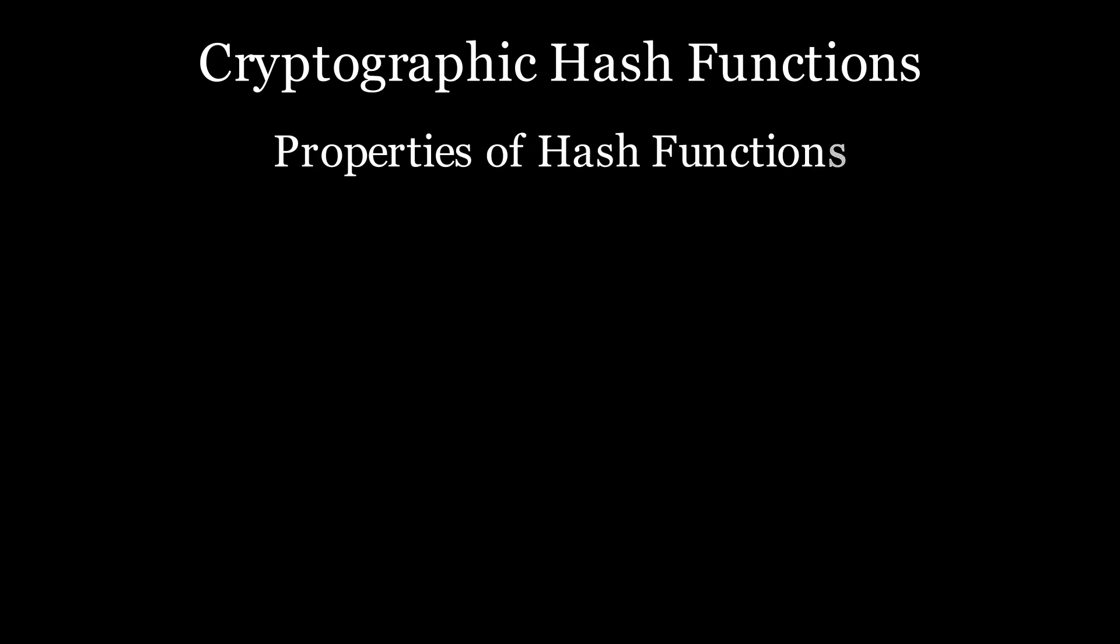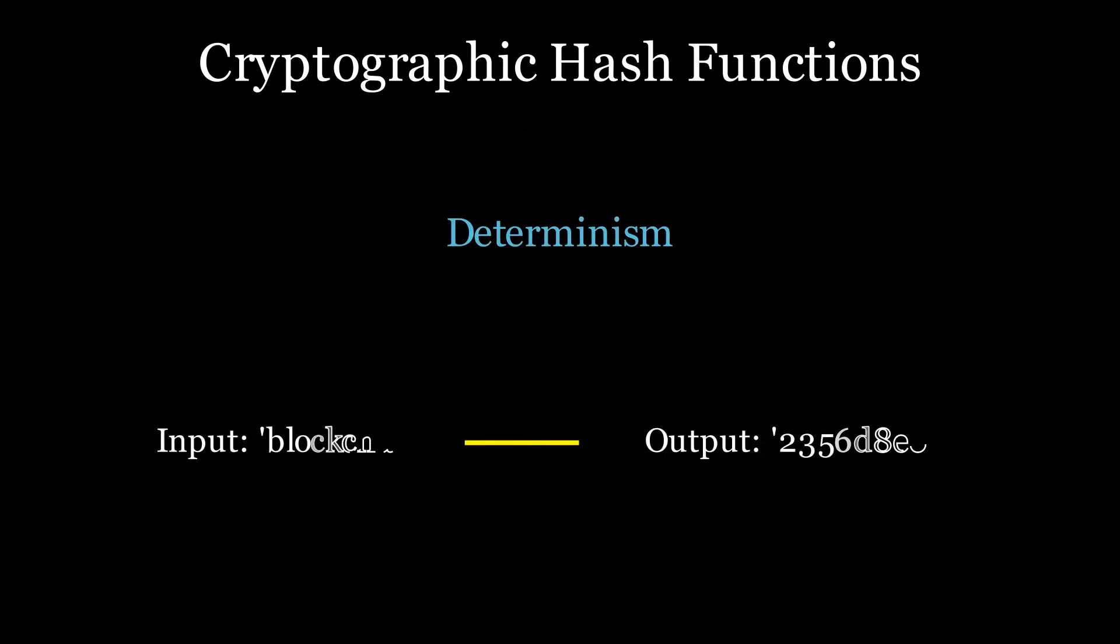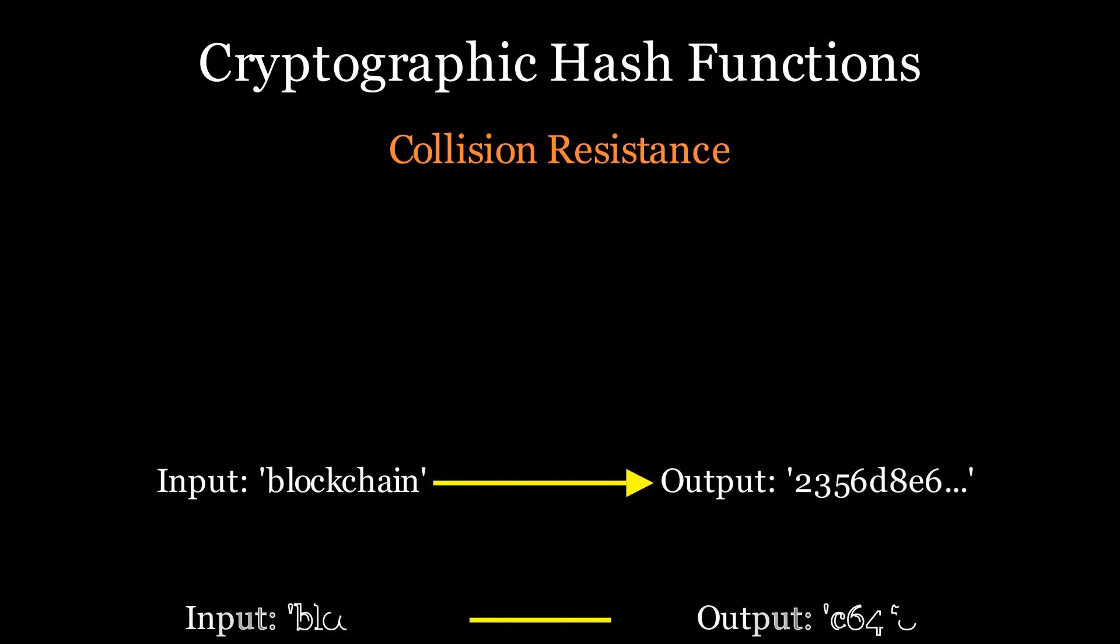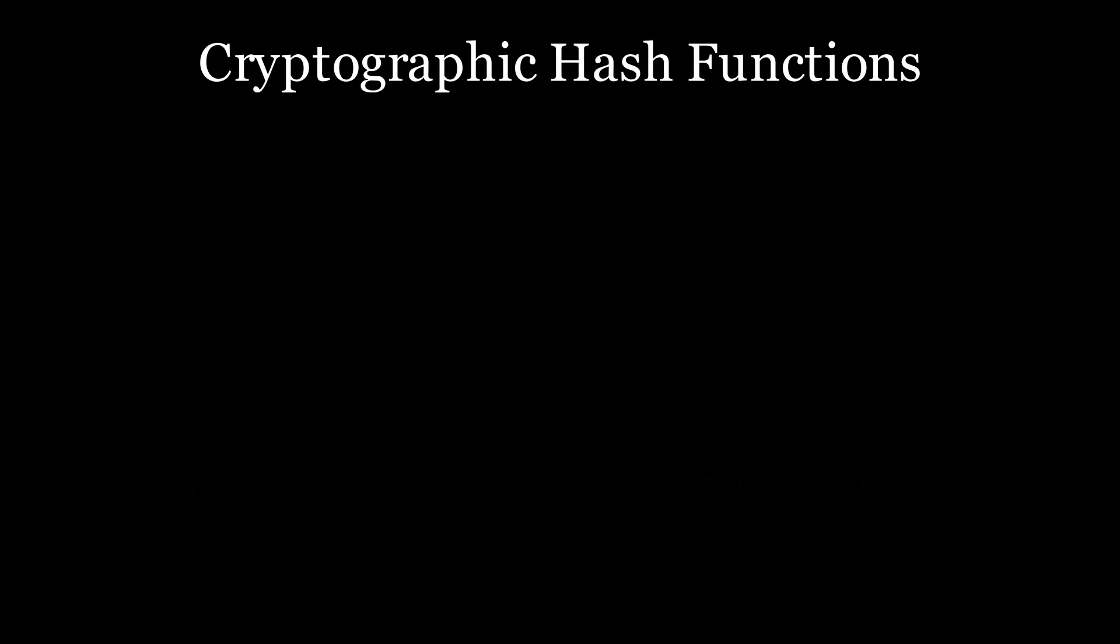First being determinism, meaning the same input always gives the same output. And next, collision resistance. It's practically impossible to find two different inputs with the same output. And lastly, irreversibility, meaning you can't reverse engineer the input from the hash itself.